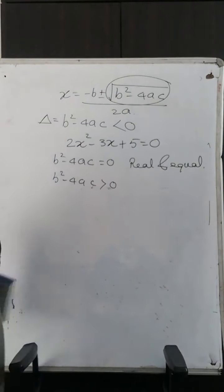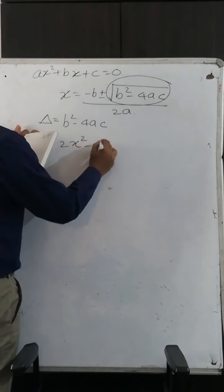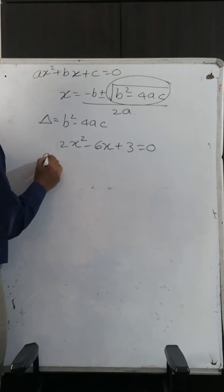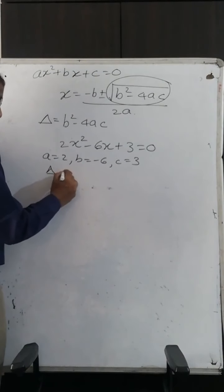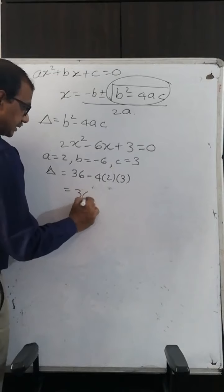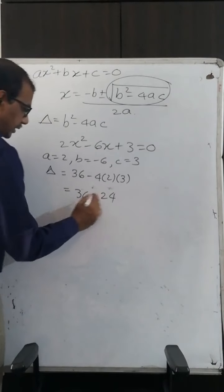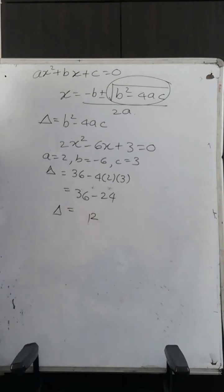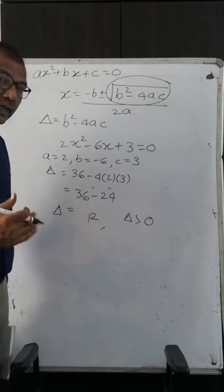Let's take one more example: 2X squared minus 6X plus 3 equals 0. Comparing the equation, we get A=2, B=minus 6, C=3. We find the discriminant: delta equals B squared minus 4AC, that is 36 minus 24, which equals 12. Since delta equals 12 and is greater than 0, the roots are real and distinct.